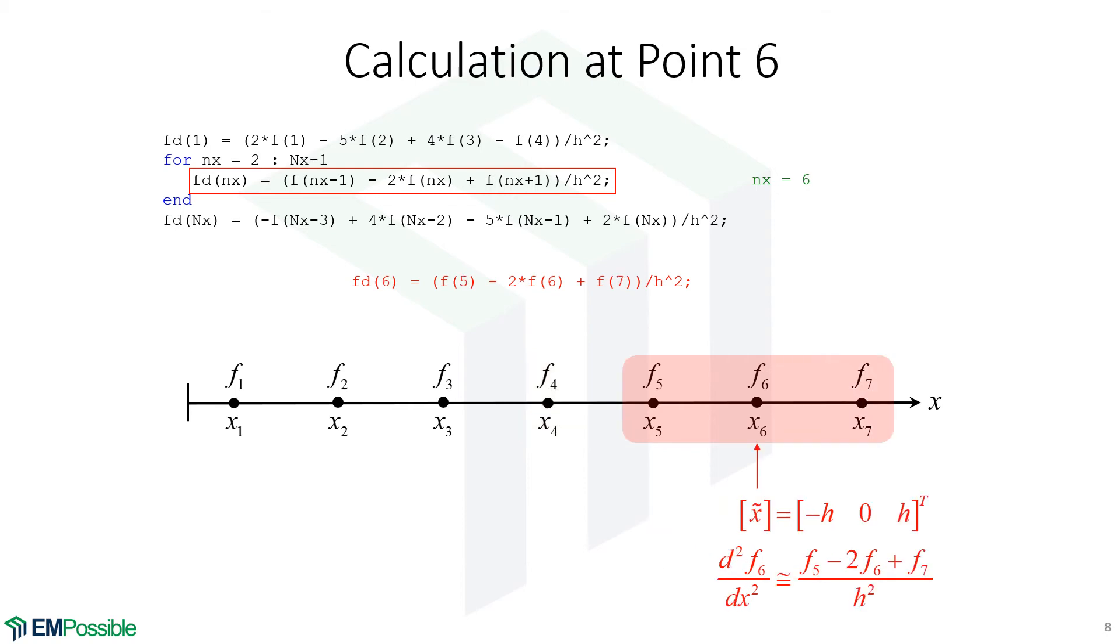And the last point in our loop, little nx equals six, and we're using F5, F6, and F7 to calculate the second order derivative at X6. This is the last point we can use this ordinary or standard second order finite difference approximation. We can't apply that to this last point because we're going to need a point from outside.